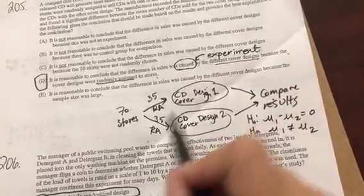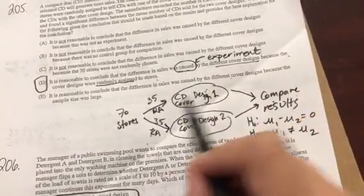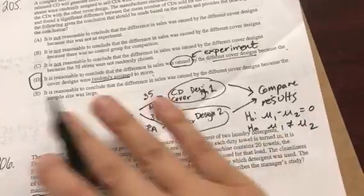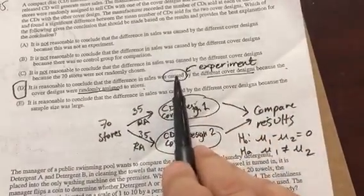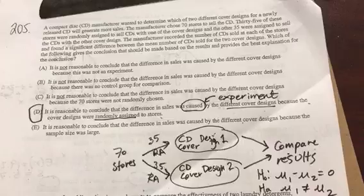Notice by randomly assigning you're isolating other variables, and if all things being equal, properly designed in an experiment, you can say the word causation. All right, next question.